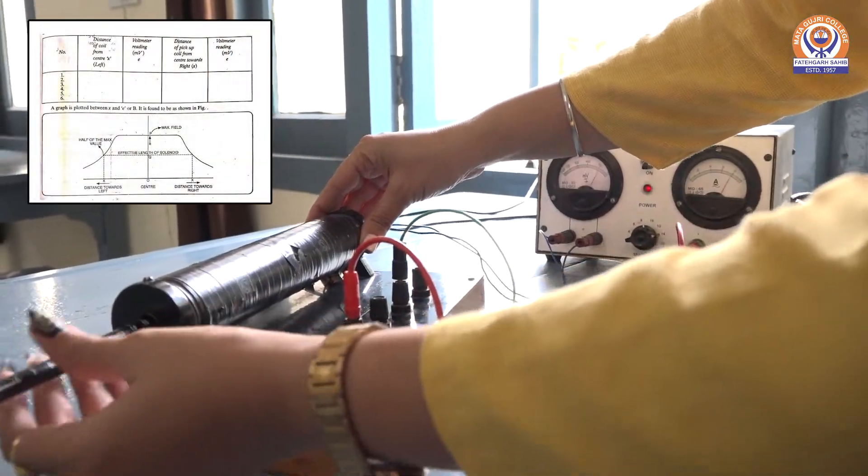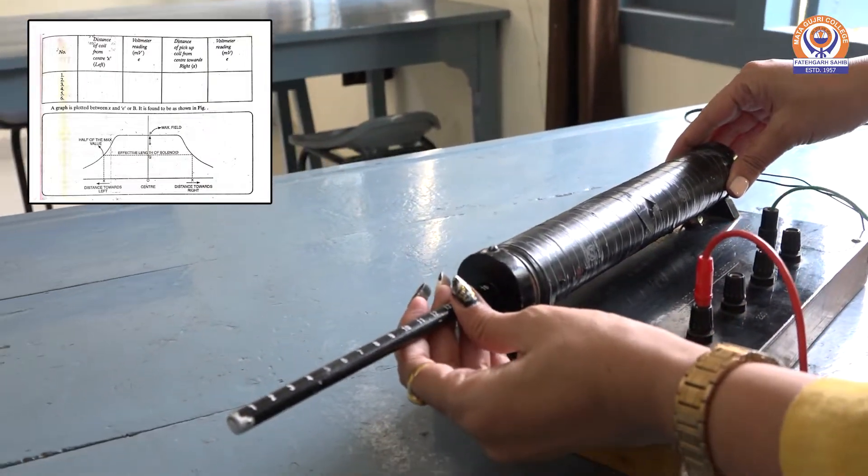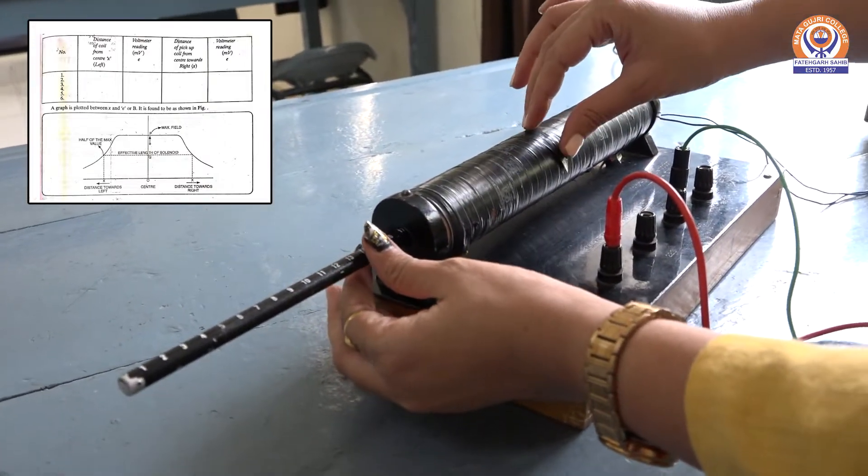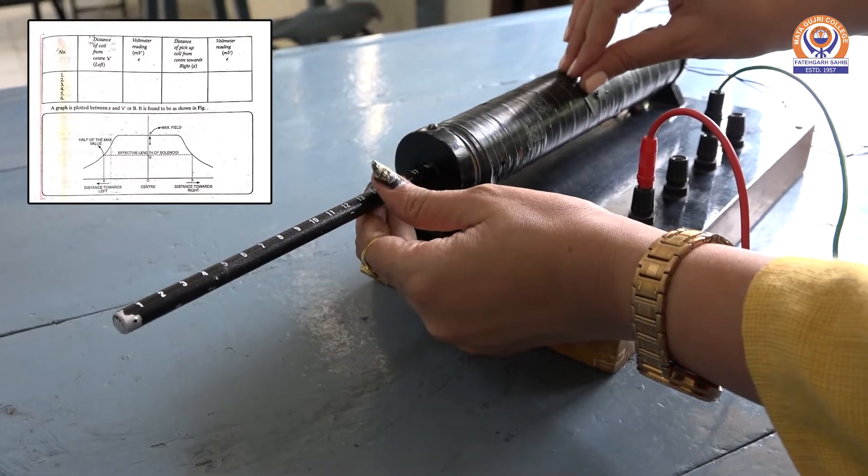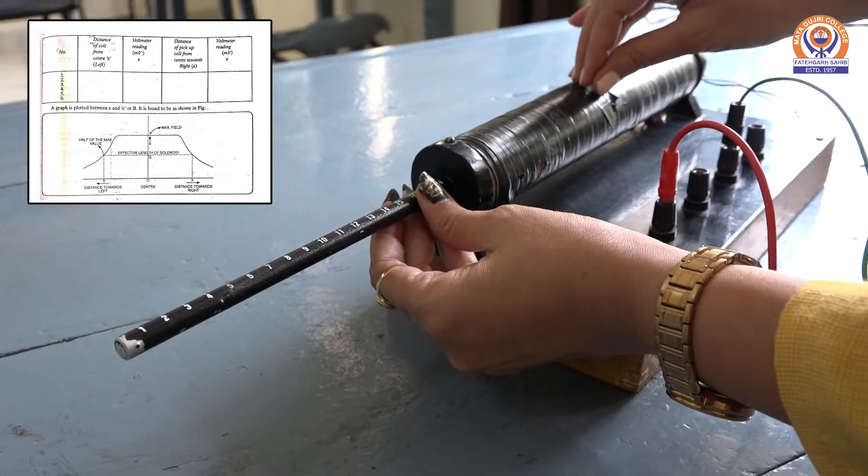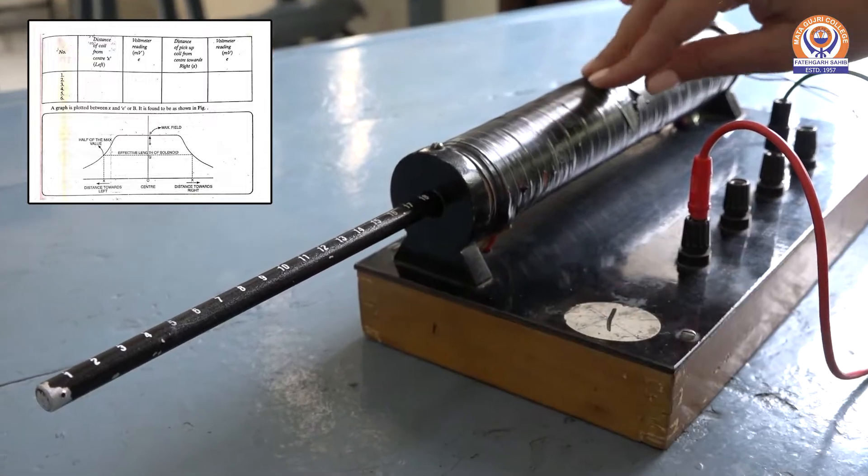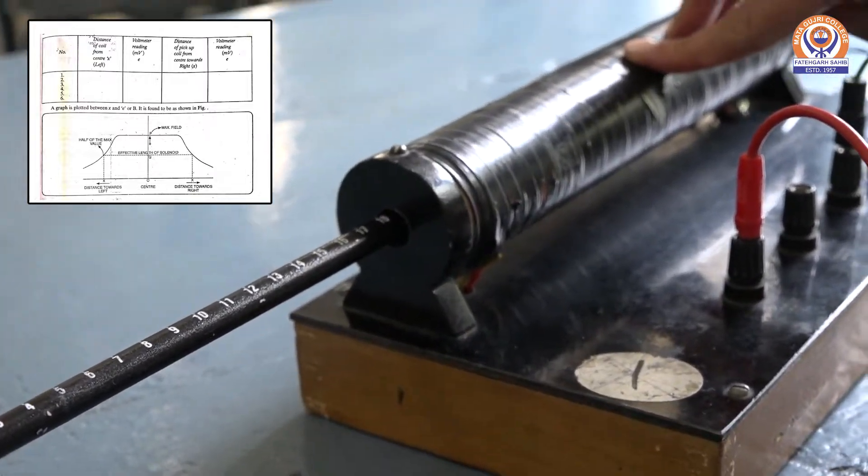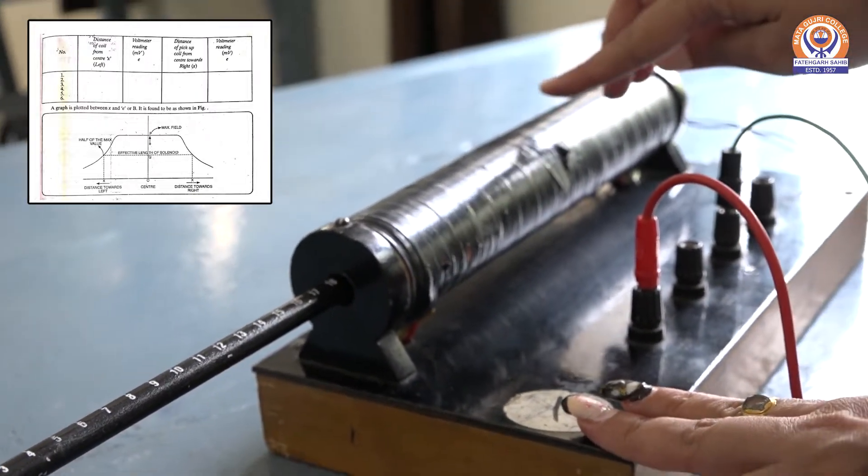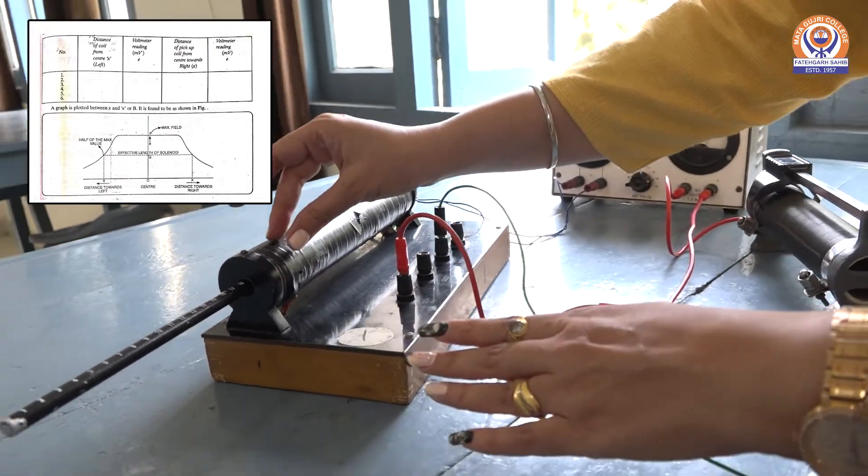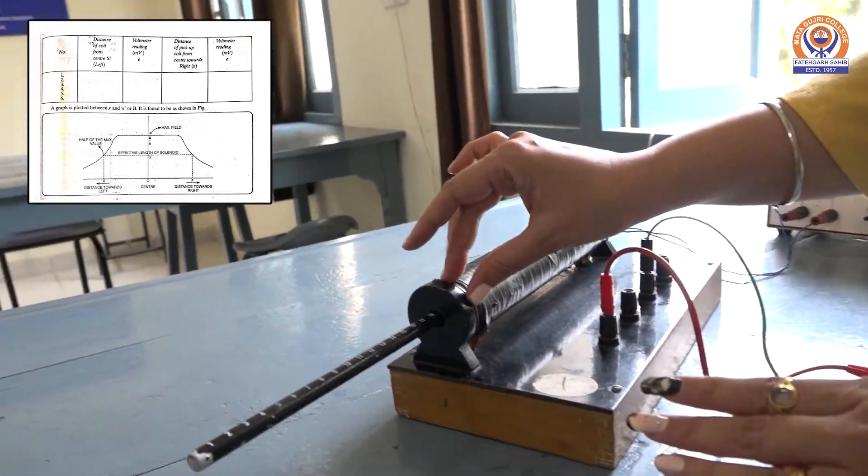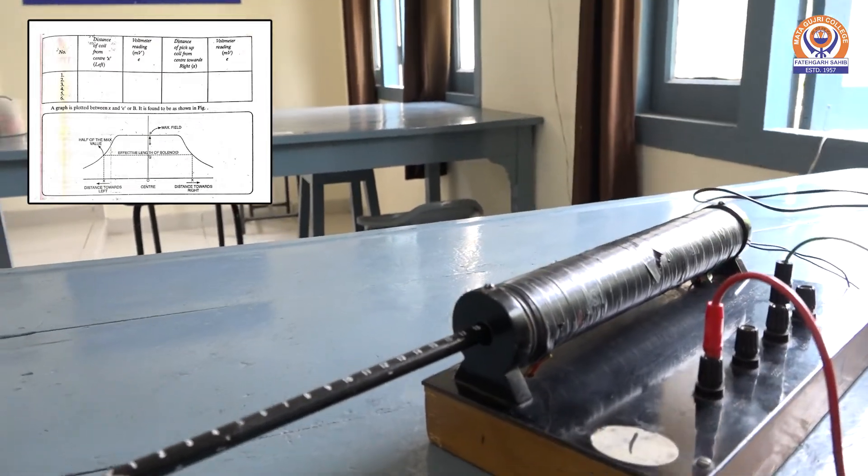For distance dependence on the value of magnetic field, we will keep the search coil, the pickup coil at the center of the solenoid. At this moment, the search coil is at the center. And we know that at the center, magnetic field value B equals mu naught N I. And it will keep on decreasing when we move towards the end point, and it will be around half at the end point. Let's see.